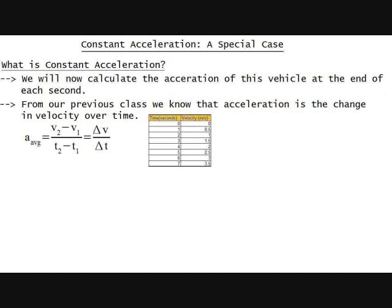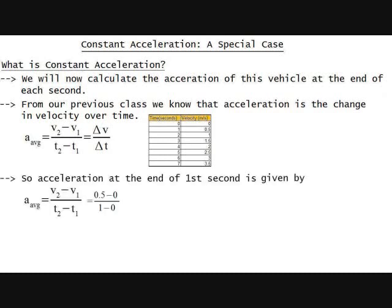So acceleration at the end of first second is given by A_average = (V2 - V1)/(T2 - T1) = (0.5 - 0)/(1 - 0) = 0.5 meters per second squared.